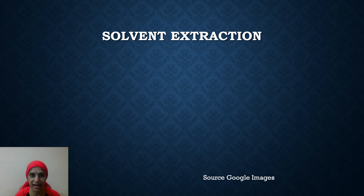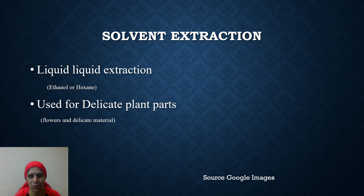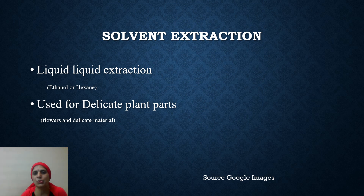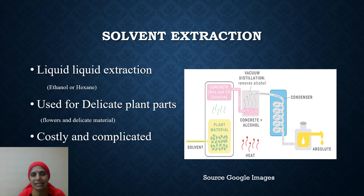To summarize: the first extraction method is expression, the second is distillation with three variants — water distillation, water and steam, and steam only — and the third method is solvent extraction, also called liquid-liquid extraction, because we use ethanol or hexane as a solvent. It is used for delicate plant material such as flowers and petals. The drawback is that we have to remove the solvent before using the product, and it is also costly and complicated.